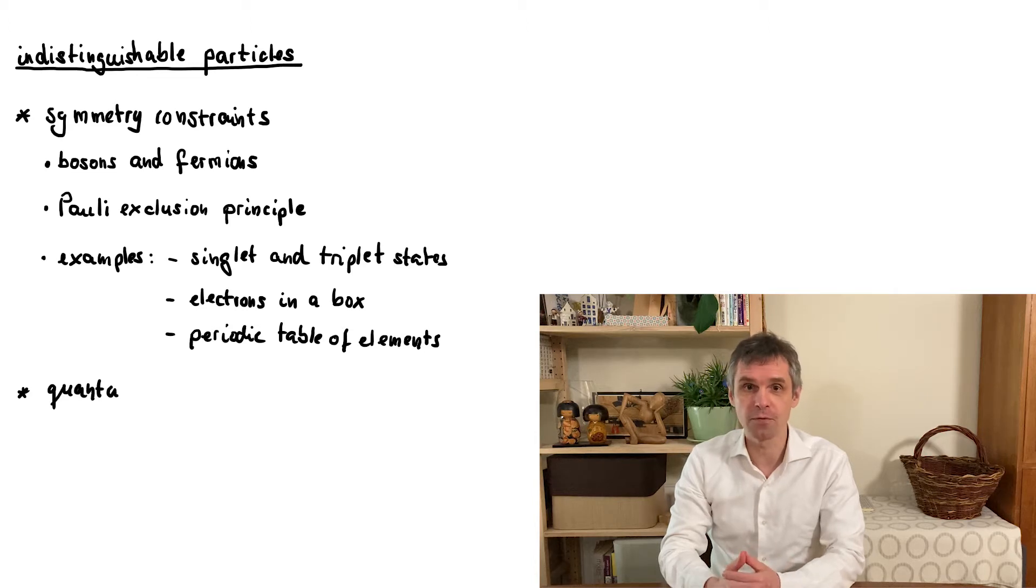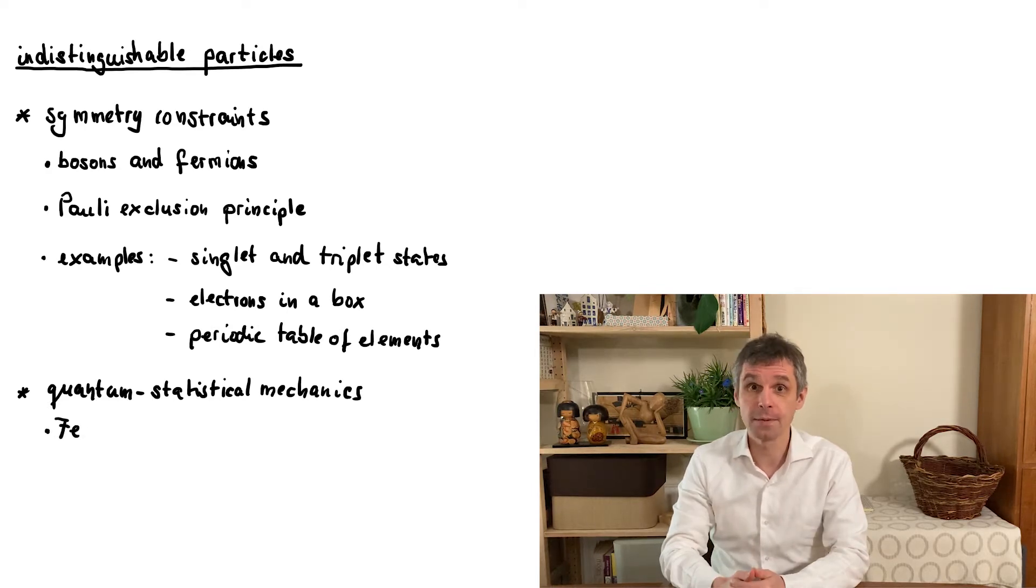In this situation, the detailed microscopic features of the states do not matter that much, instead we are interested in a statistical description. This again differs for fermions and bosons, leading to Fermi-Dirac and Bose-Einstein statistics.